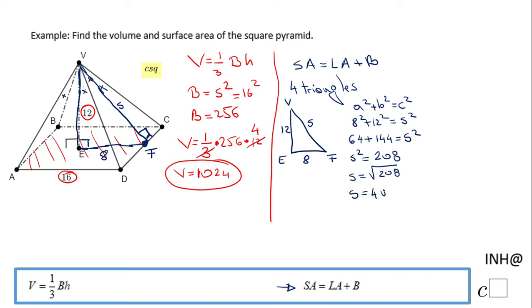So now we know the slant height, which is the height of the triangle VDC, so we can find the area of that triangle, which is going to be 1 over 2 times the base.